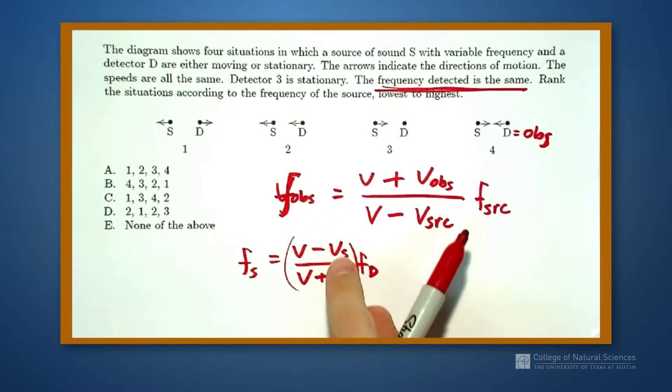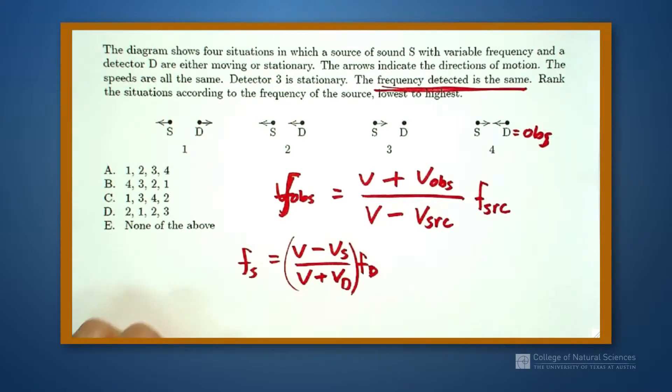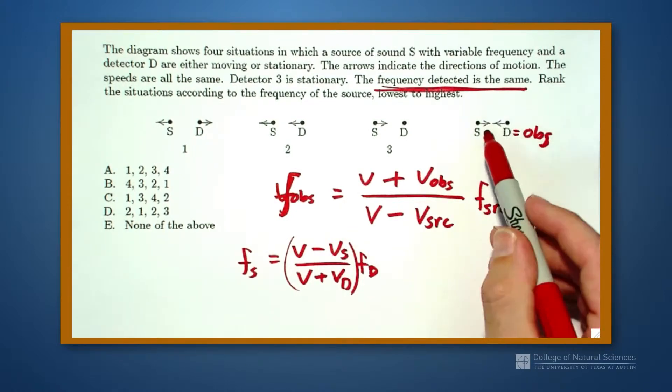And I know that this equation, sometimes you see it in a different form where it has pluses and minuses, or a plus minus and a minus plus. But I remember that if the detector and the source are moving towards each other, then these each get plus signs. If they're moving away from each other, then we introduce another minus sign into these.